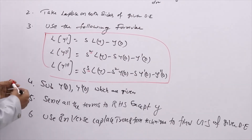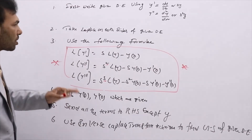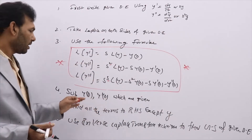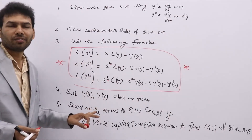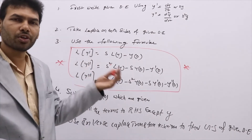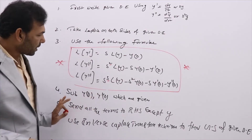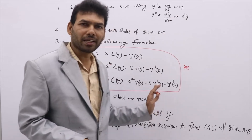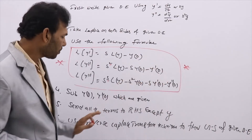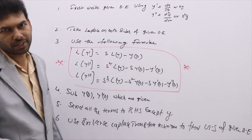To summarize the procedure: first take Laplace, apply these formulas, substitute the initial condition values if given — otherwise keep y(0) and y'(0) as they are or assume them as constants. Send all terms to the RHS except Y, so L comes to the RHS and becomes L inverse. Use inverse Laplace transform techniques to find Y, which is the general solution.